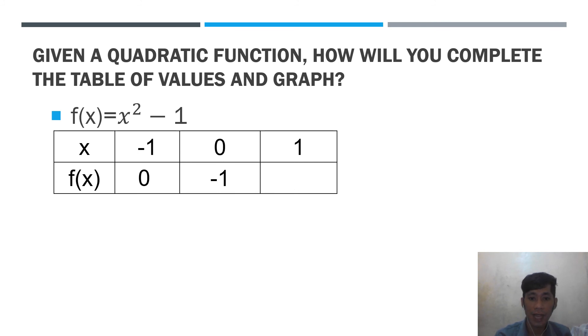So, to find the third value, again, papaltan lamang po natin yung x na positive 1 by substitution. So, papaltan lamang po ang x ng 1, x ng 1. So, f(1), 1² is 1 times 1 is 1. Then, the solution is 0. Then, after po natin yan, makomplete na po natin lahat ng table of values, pupunta na po tayo sa graphing.